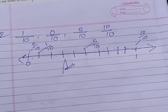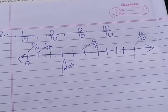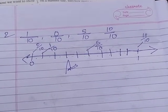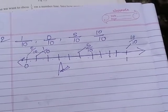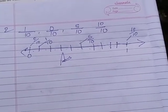The denominator number - we will divide that many parts. The numerator number - we will count from the starting, and there we will mark the given division. This is how we will do this question.